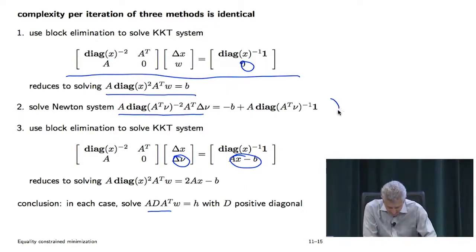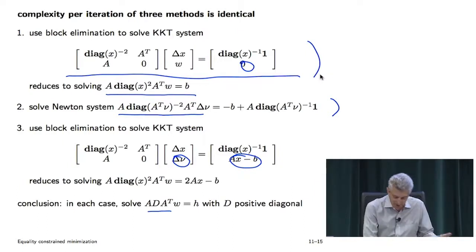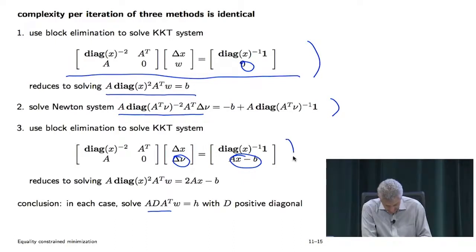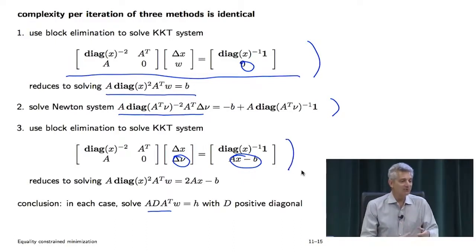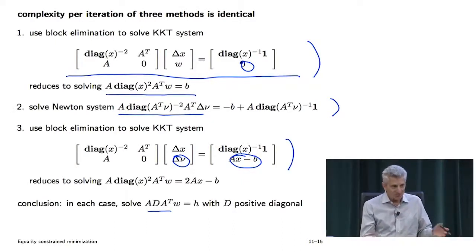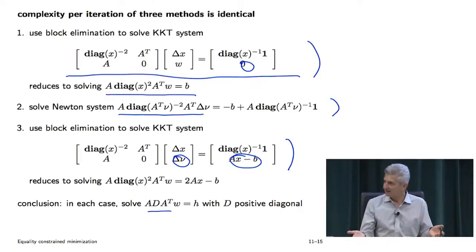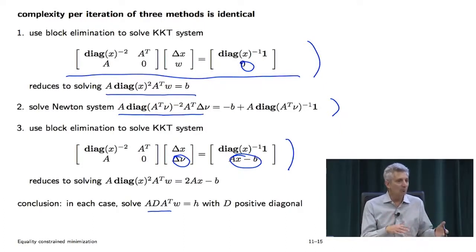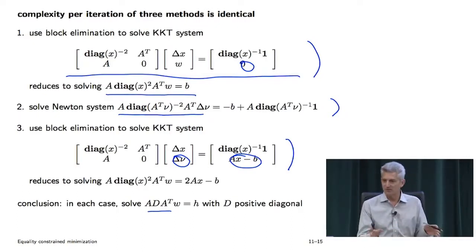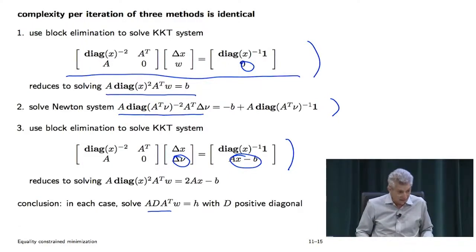In each case, you end up solving A D A-transpose W equals H. That says the cost of the three methods is identical — despite this one appearing to have 100 variables, this one has 500, and this one has 600 (updating primal and dual). So don't be fooled when someone tells you about the complexity of Newton's method. Ask a few questions to probe if they know numerical linear algebra. If they don't, ignore everything they say about what's hard and easy — they're probably completely wrong.